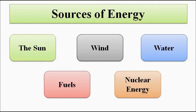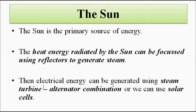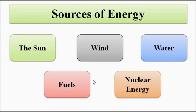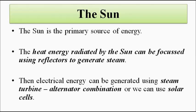First is the Sun, which is the primary source of energy. The solar output controls each and every aspect associated with Earth, starting from the hydrological cycle — it indirectly affects other sources of energy as well. The heat energy radiated by the Sun can be used for power generation: using reflectors, it can be used to generate steam, and then steam turbines can be used as prime movers to drive an AC electrical generator to generate the required electrical energy.